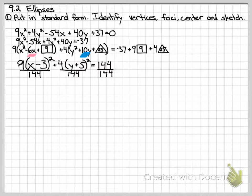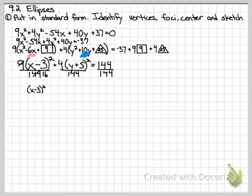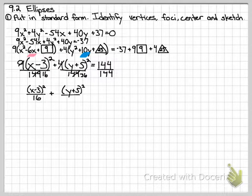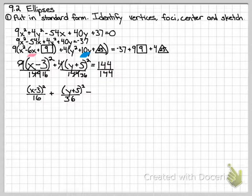It just so happens that 9 goes into 144 16 times, so that leaves me with x minus 3 quantity squared, and now it's over 16 plus, because it's an ellipse. It also just so happens that 4 goes into 144 36 times, so that leaves me with y plus 5 quantity squared, now it's over 36, and it equals 1 like it's supposed to. So this is my standard form of an ellipse.